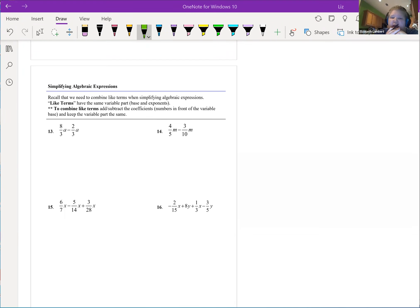So the last part we have is what's called like terms. To combine like terms they have to have the same exact variables with the same exact exponents. The variable parts have to look identical.